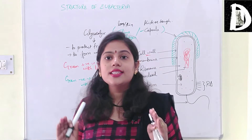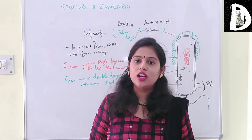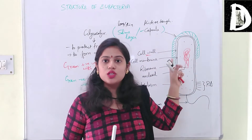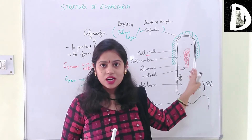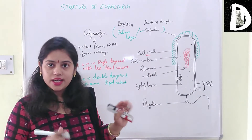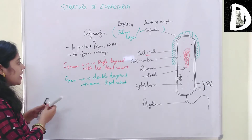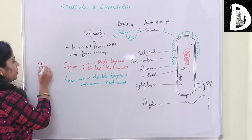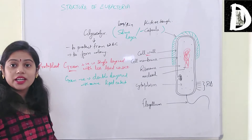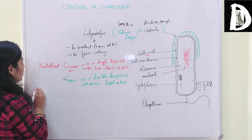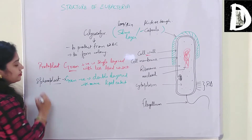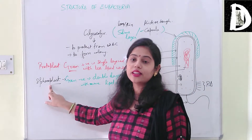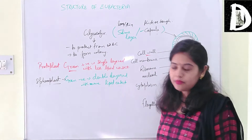The bacterial cell without a cell wall is known as a protoplast. Lysozyme is an enzyme that degrades the cell wall. If the cell wall is removed, the cell only has cytoplasm contents and cell membrane - this is called a protoplast. However, a gram negative bacterial cell without a cell wall is known as a spheroplast.